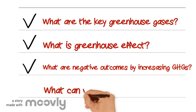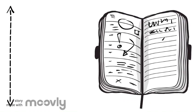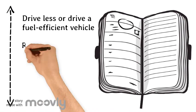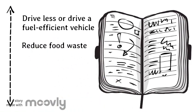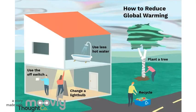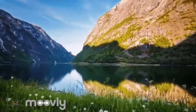Thus, we should do something to prevent global warming. Here are actions that can be easily done. For instance, we can reduce emissions by driving less or driving a fuel-efficient vehicle. In order to save energy, we should also reduce food waste. We can also recycle more and use more renewable energy. As members of the Earth, we should all try our best to participate in these actions so we can protect our homeland.